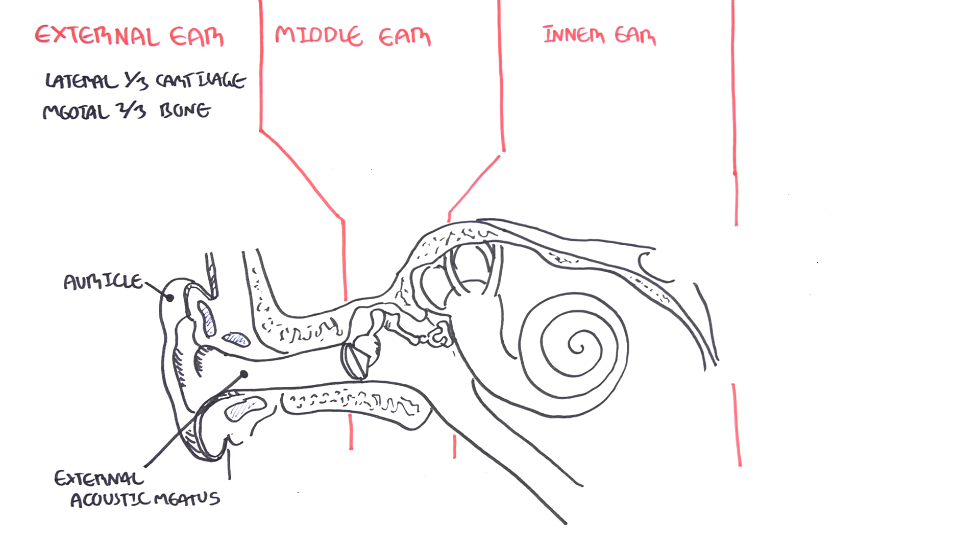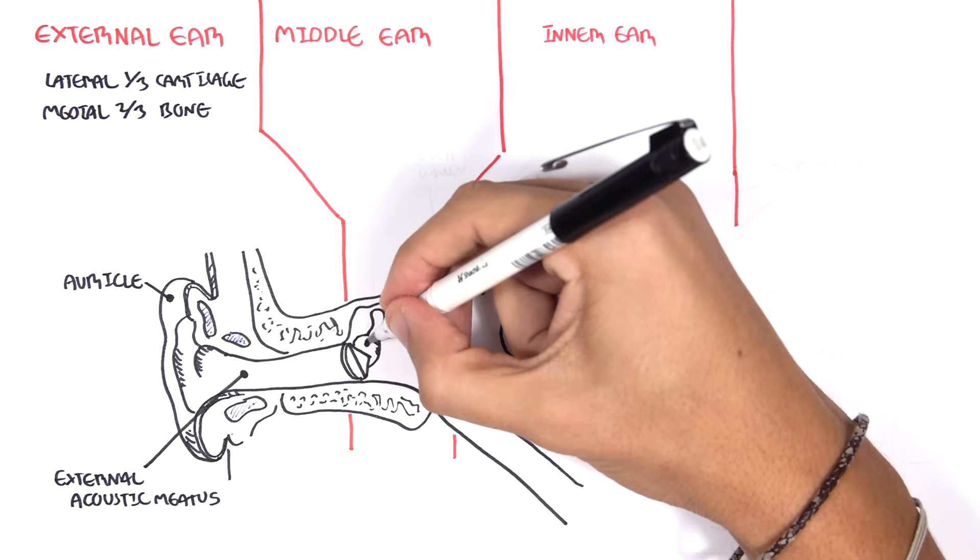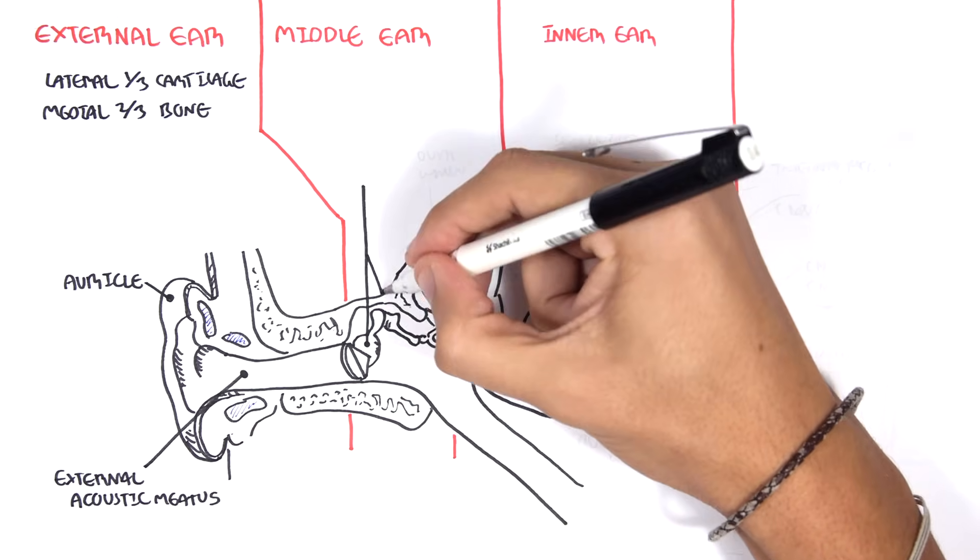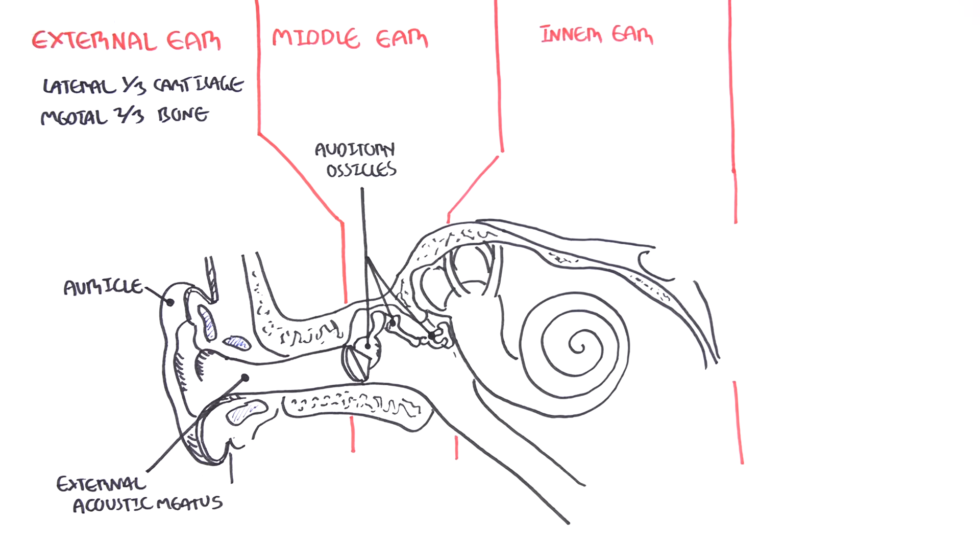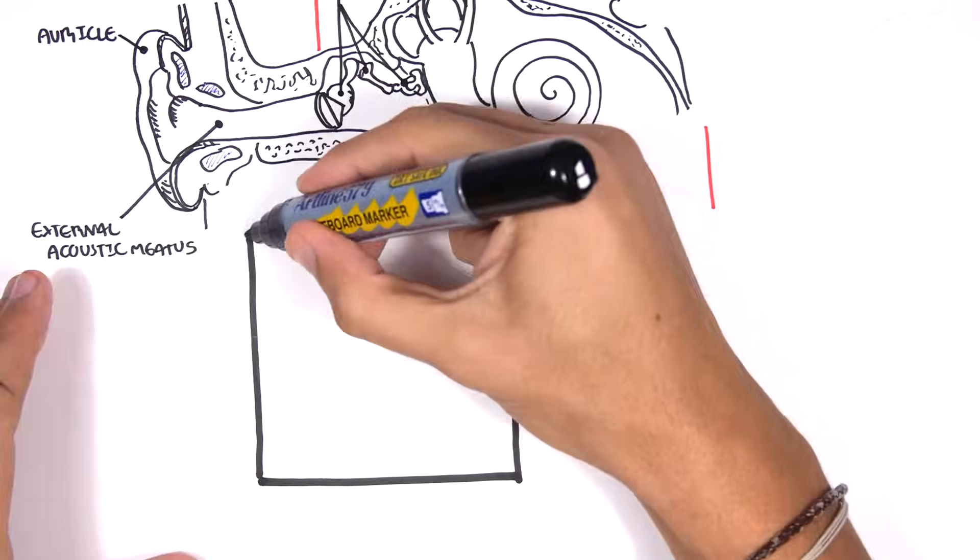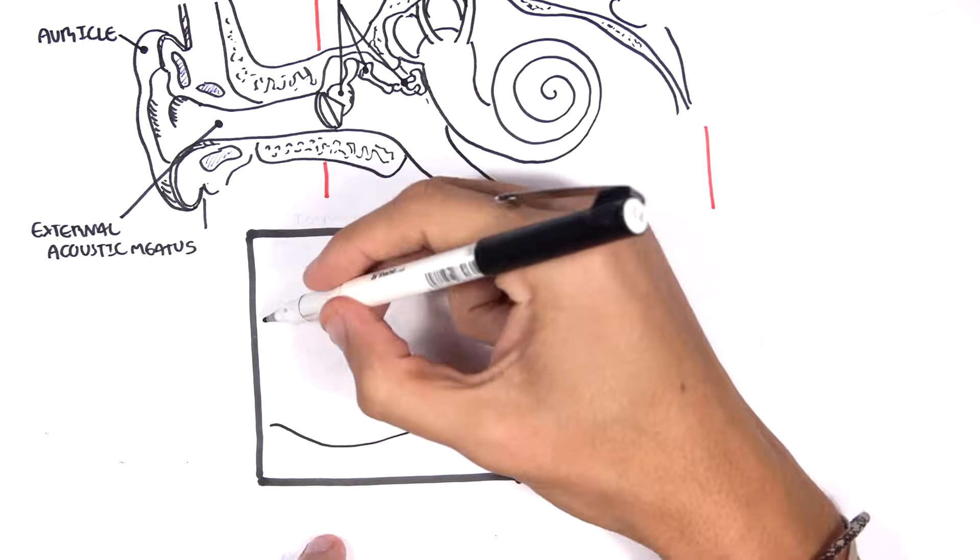Let us look at the middle ear which contains our three bones called the auditory ossicles. Let us look more closely at what makes up our middle ear. The middle ear has boundaries. Here is the bone and the eardrum.